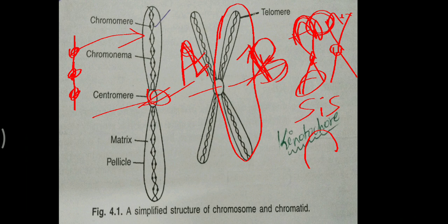Coming to chromonema — under a light microscope, thread-like coiled structures are found in the chromosomes and chromatids, which are called chromonema. The plural form of chromonema is chromonemata. Chromonema is considered to be associated with three main functions, and it controls the size of the chromosome because its coiled structure is found in chromosomes.